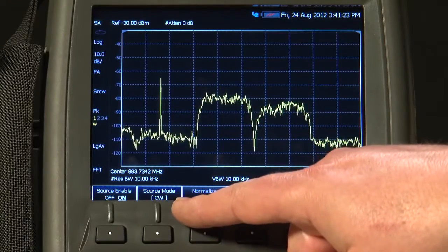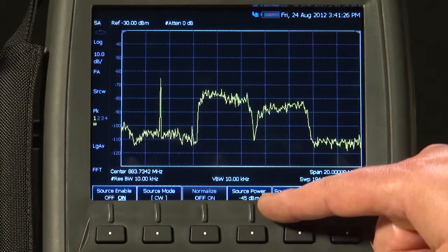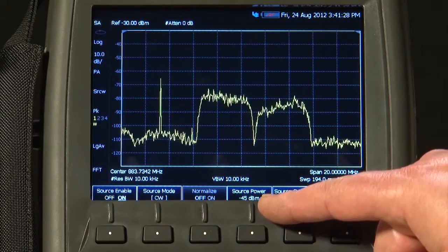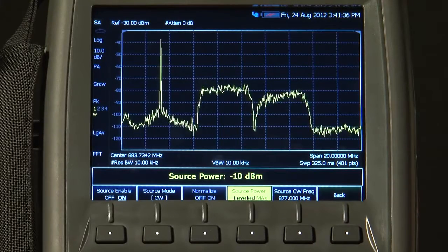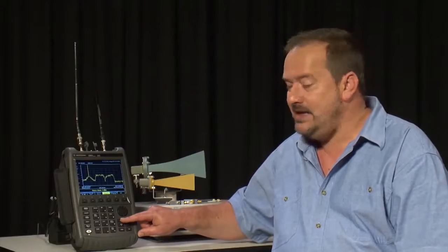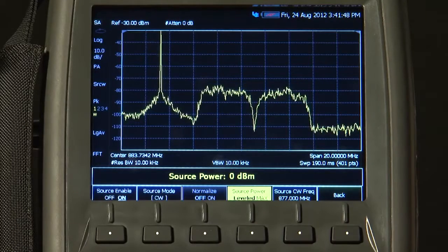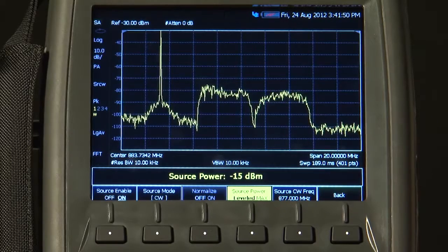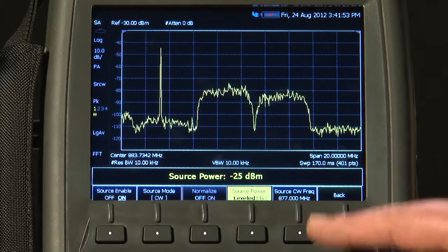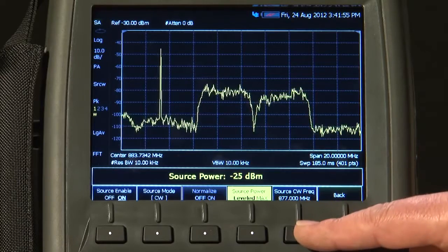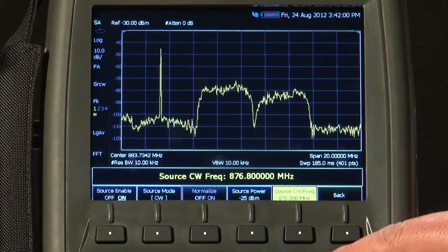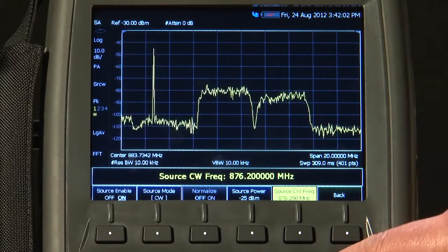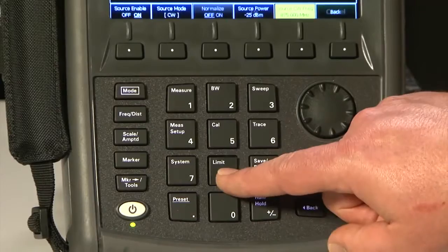The Source Mode is set to CW. The Source Power is adjustable. I have currently got it set to minus 45 dBm, but I can easily adjust that. In fact, I think we can go up to 0 dBm, and the output power is still leveled. Let us drop that back a bit, and we can set the frequency as well. Currently set to 877 MHz, but we can adjust that with the knob, or just enter a numeric value.